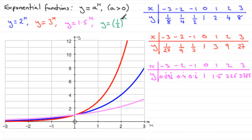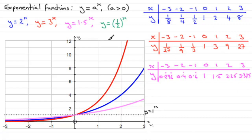Before looking at y equals one half to the power x, let's consider the simple case of y equals 1 to the power x. Since 1 to the power of anything is always 1, this gives a horizontal straight line at y equals 1. That is the graph of y equals 1 to the power x.